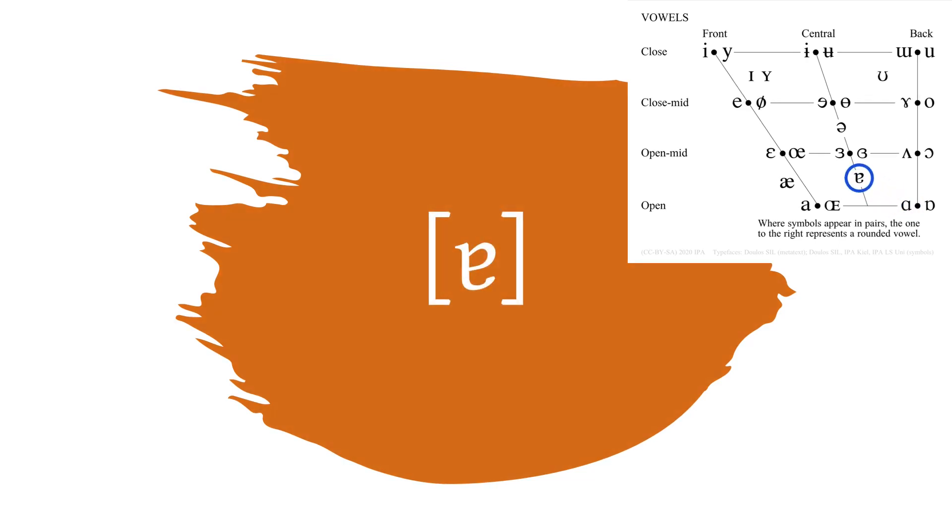which does not capture the full openness of A. To transcribe the vowel unambiguously, it is therefore required to use diacritics to modify a vowel such as A or A or A or A.